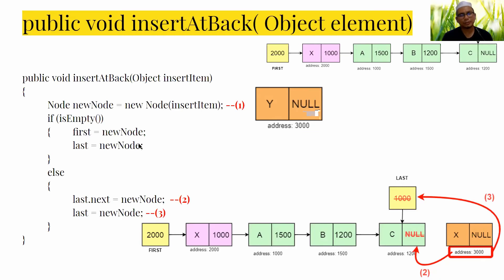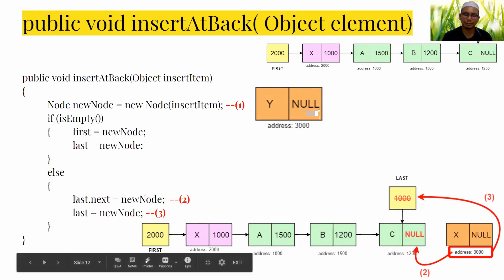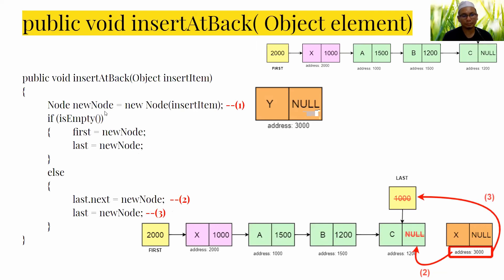As with insertAtFront, we check using isEmpty to make sure the list is not empty. If the list is not empty, we proceed to the second step: assign the address of the new node — for example address 3000 — to last, since the new node will become the last node.